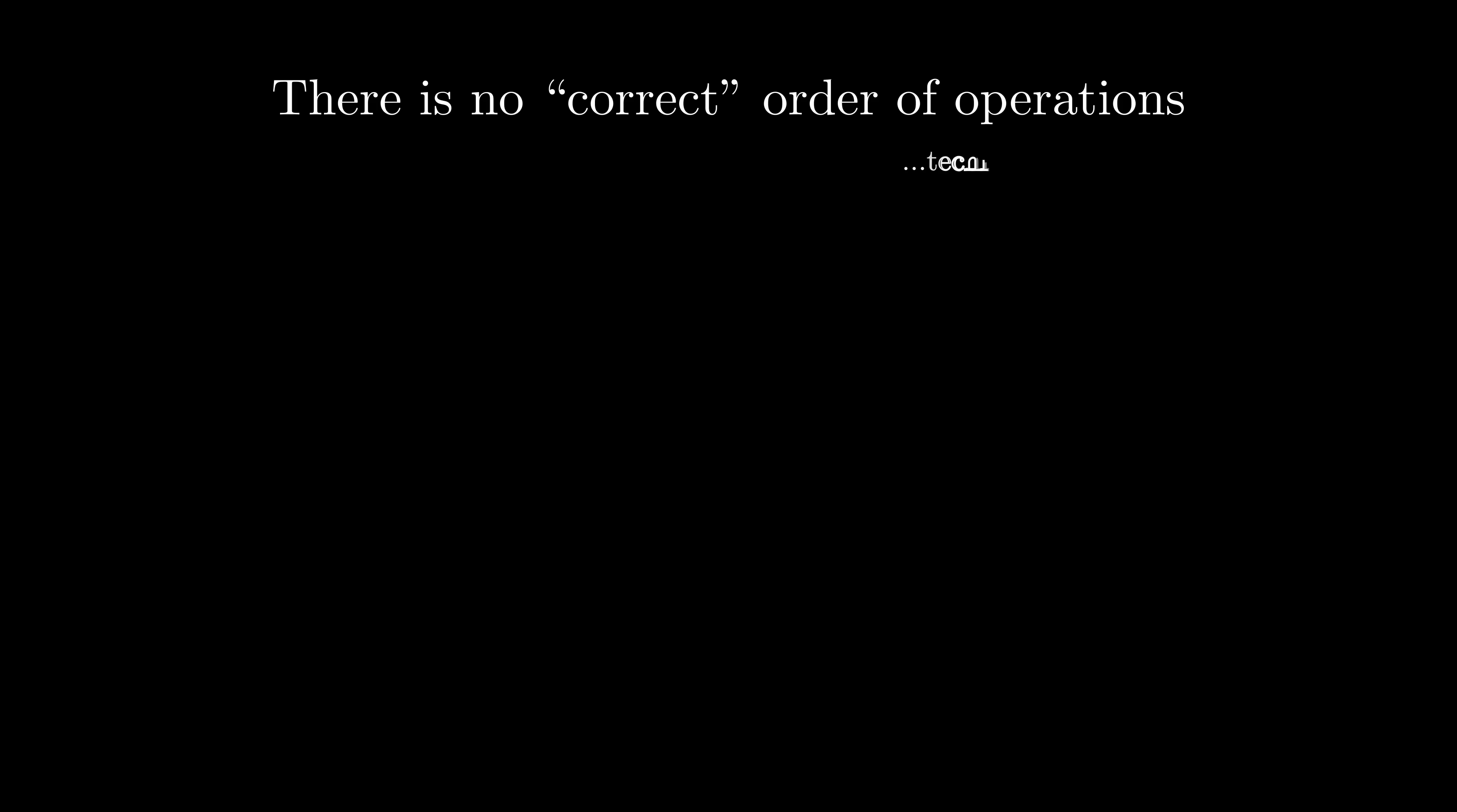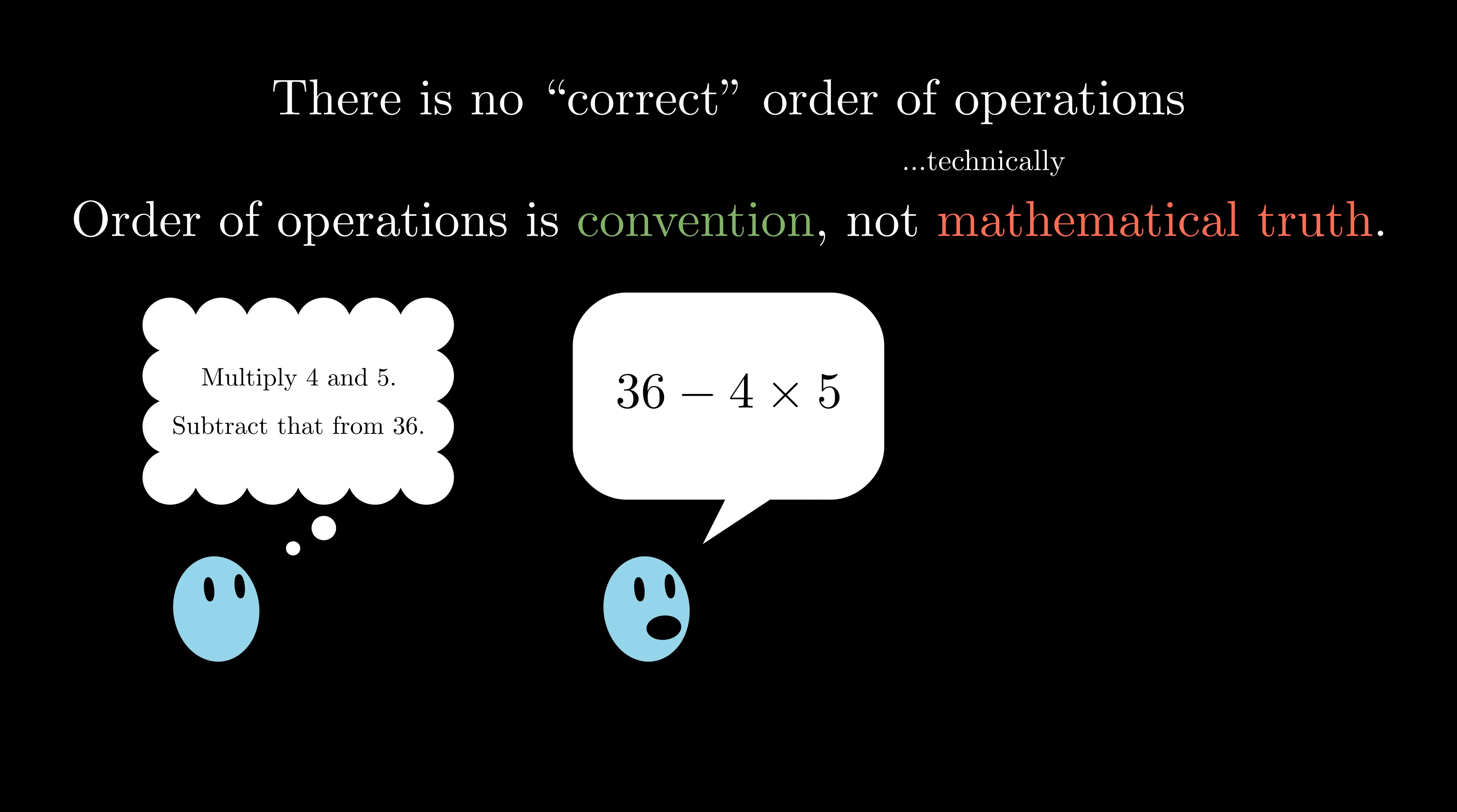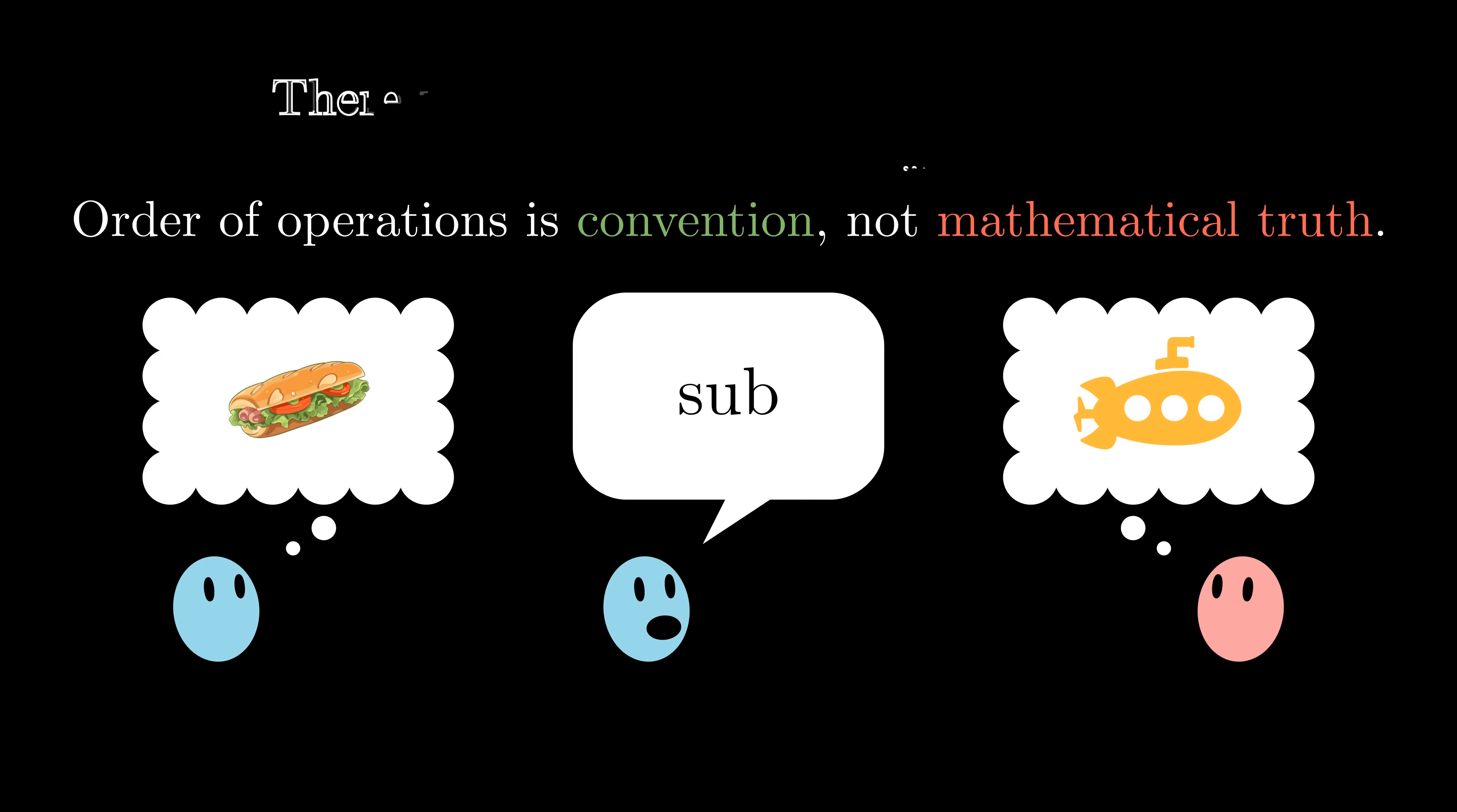Before we even begin talking about the order of operations itself, we need to first understand that the order of operations is a matter of convention, not mathematical truth. For any value or expression you want to communicate, you have to communicate how that value or expression is obtained. It has to be interpreted by others. The order of operations doesn't matter, as long as all communicating parties agree to some order, in the same way that communicating parties should agree on the definitions of words before they use them.